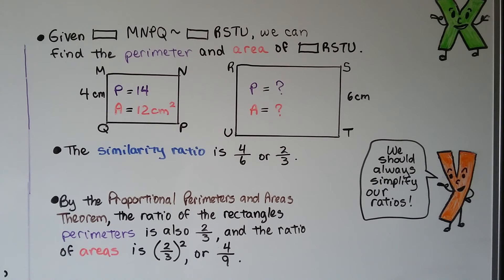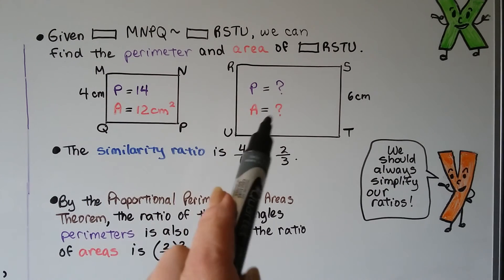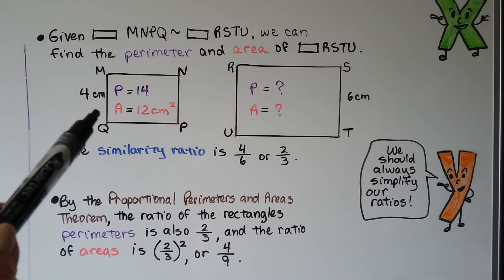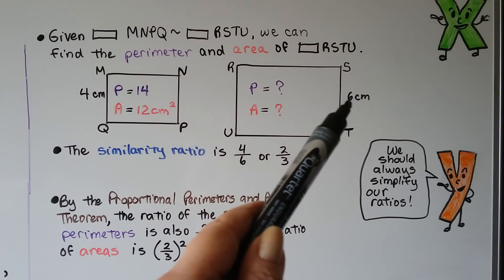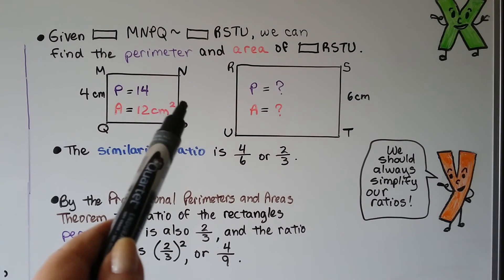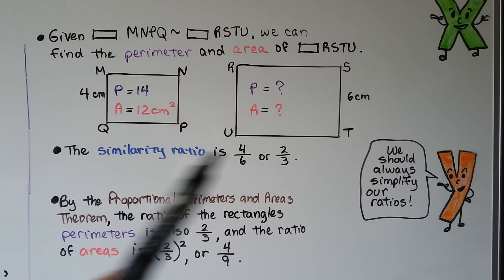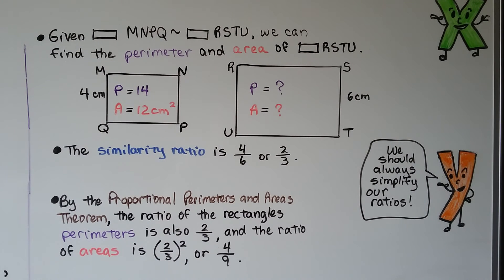Here's another example. Rectangle MNPQ is similar to rectangle RSTU. We're given that one side is 4 centimeters and another is 6 centimeters. Since it's a rectangle, opposite sides match: 4 cm and 6 cm. The similarity ratio is 4 over 6, which simplifies to 2/3 — always simplify your ratios. By the Proportional Perimeters and Areas Theorem, the perimeter ratio is also 2/3, and the area ratio is (2/3) squared, or 4/9.